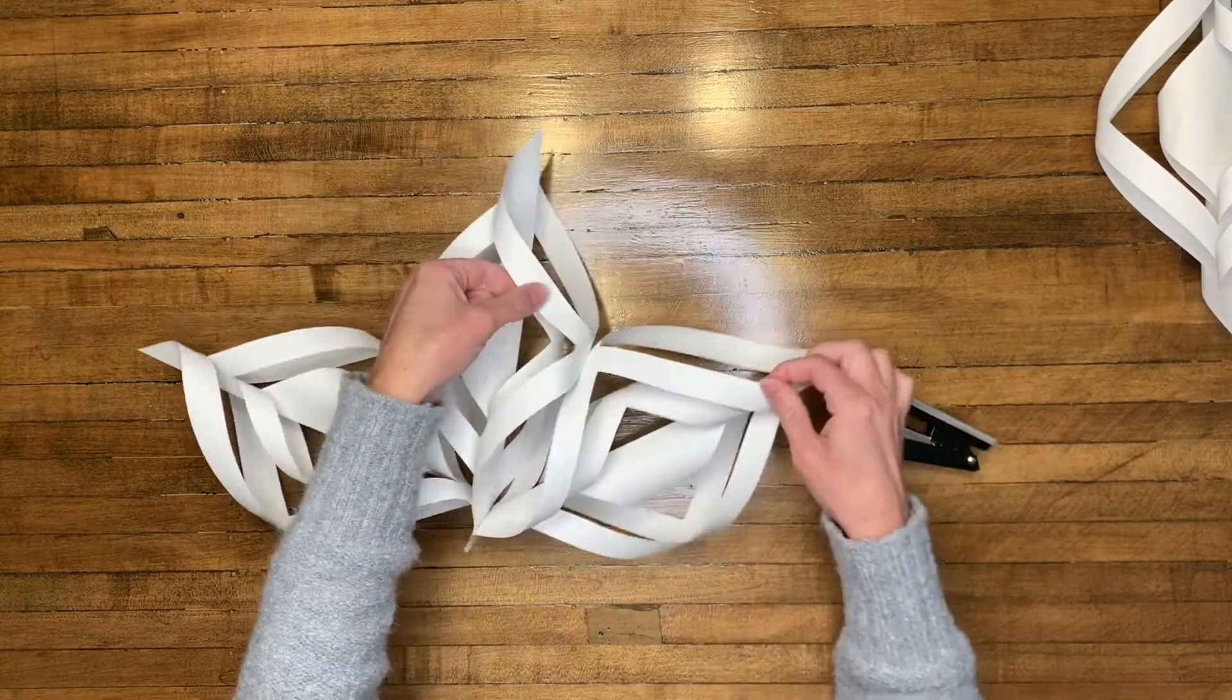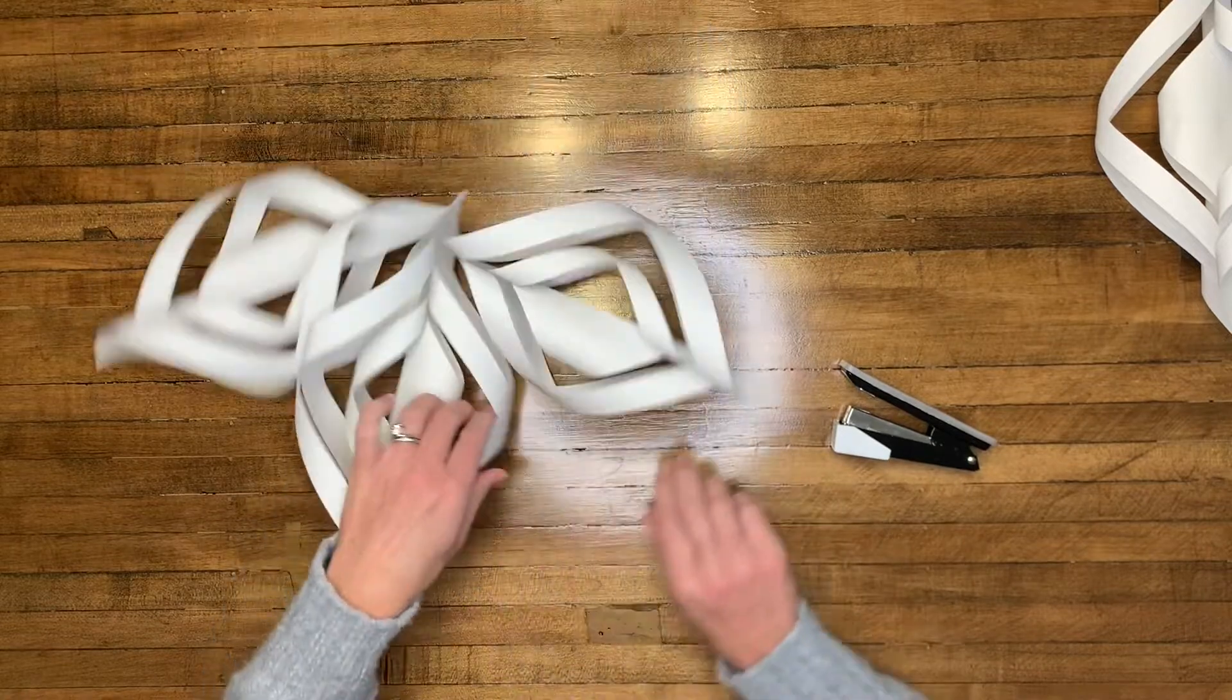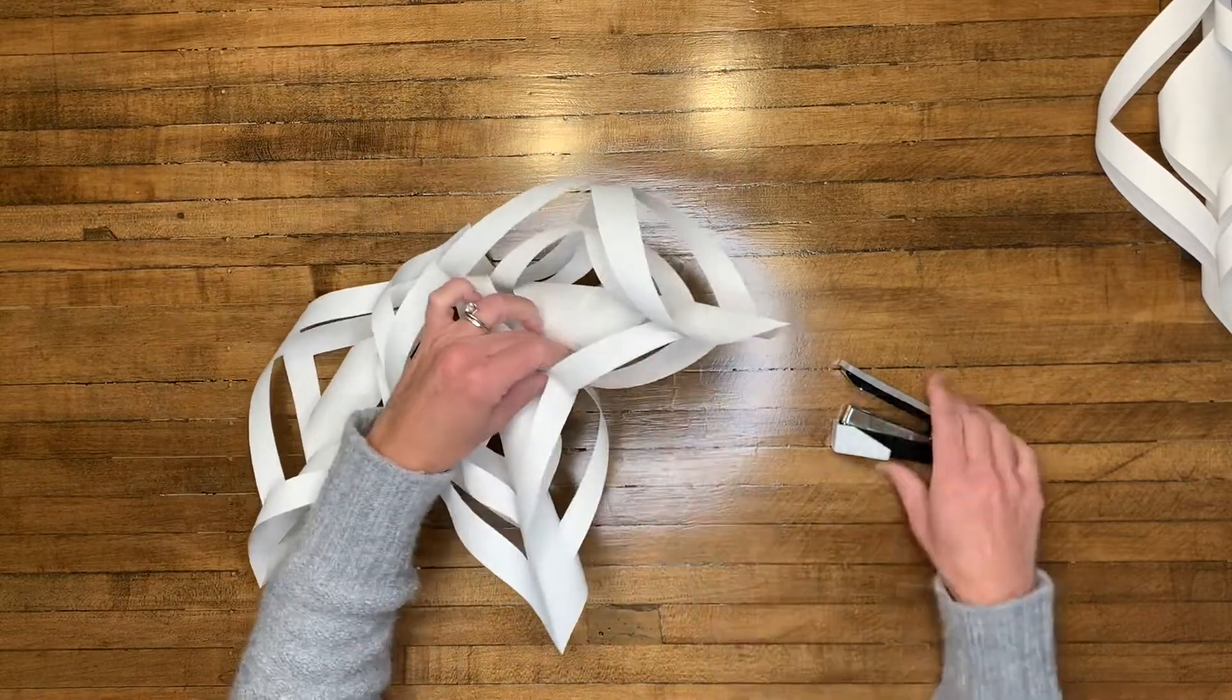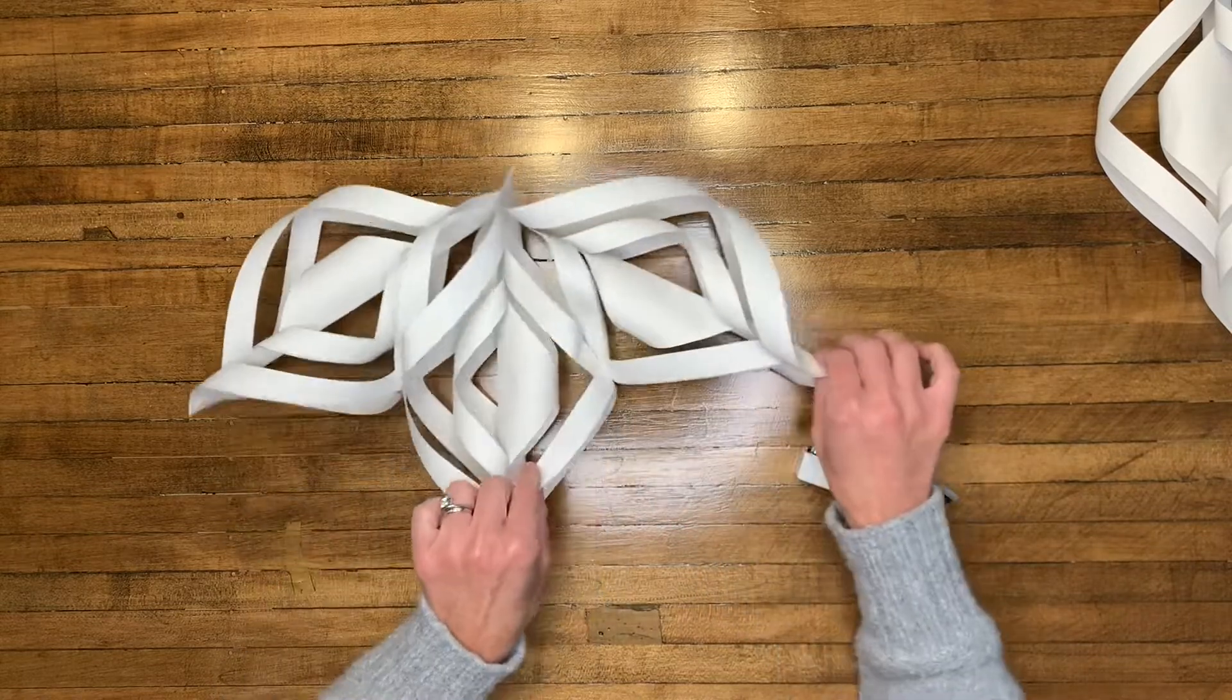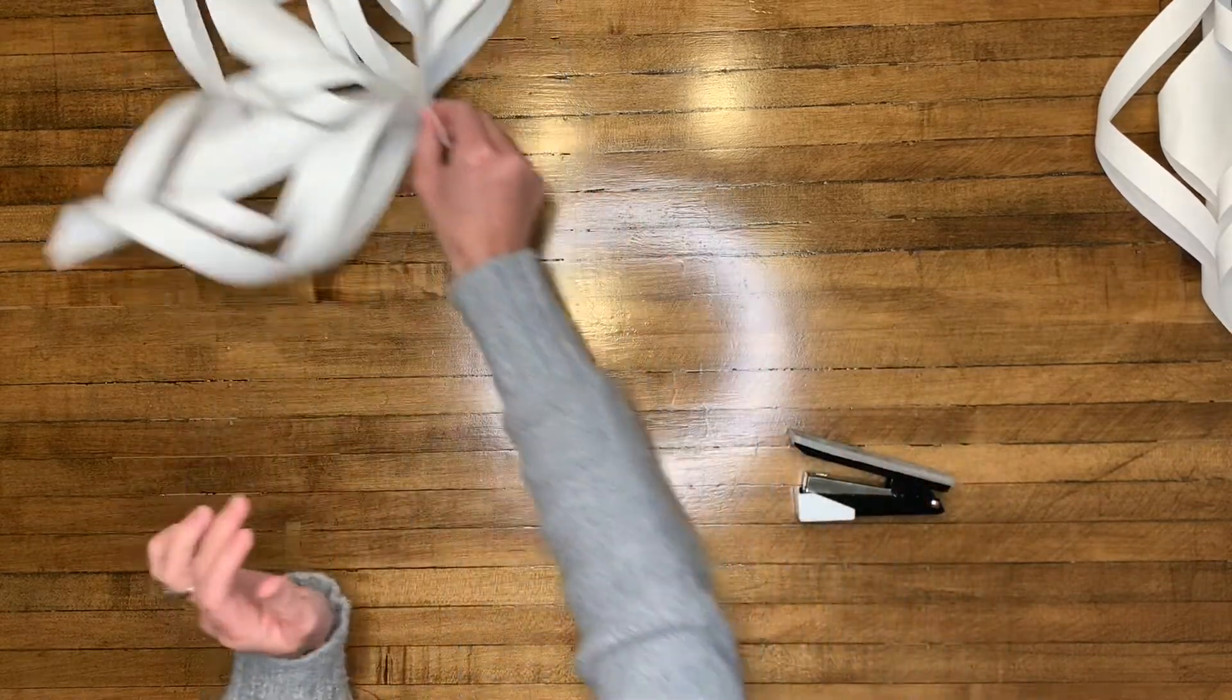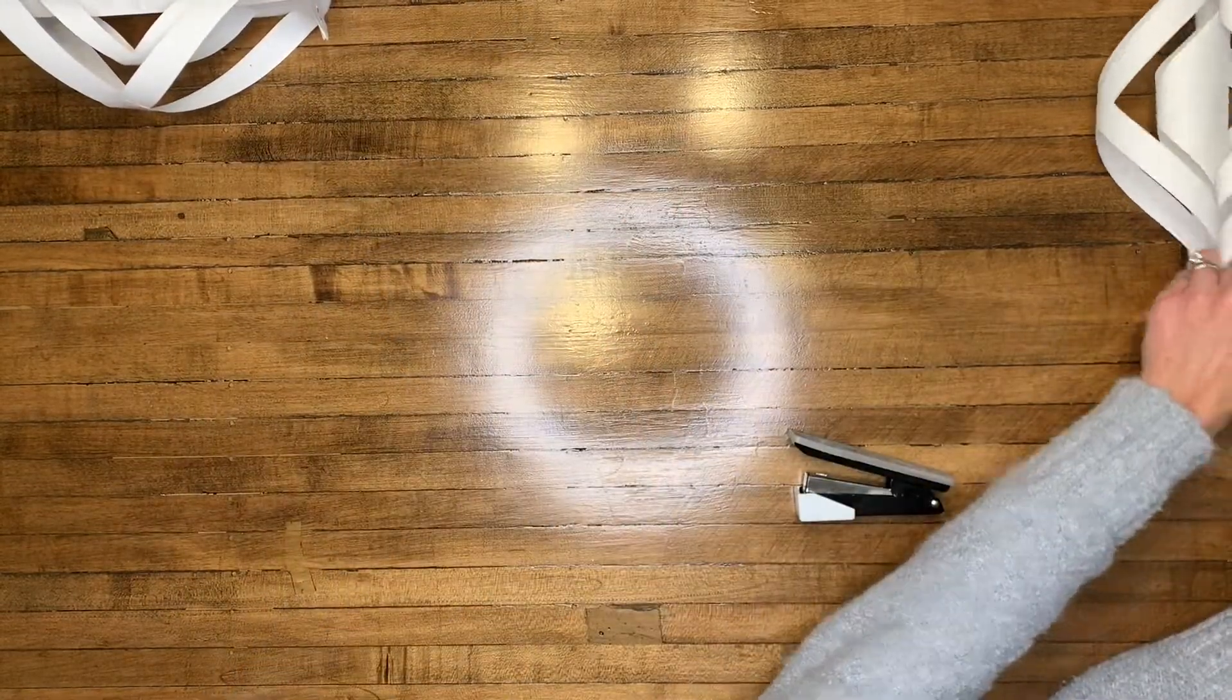I'm going to do that so that they stay connected and I want to do that one more time on the other side. Those outer loops I'm just going to touch together and then staple. You now have one half of your snowflake done.